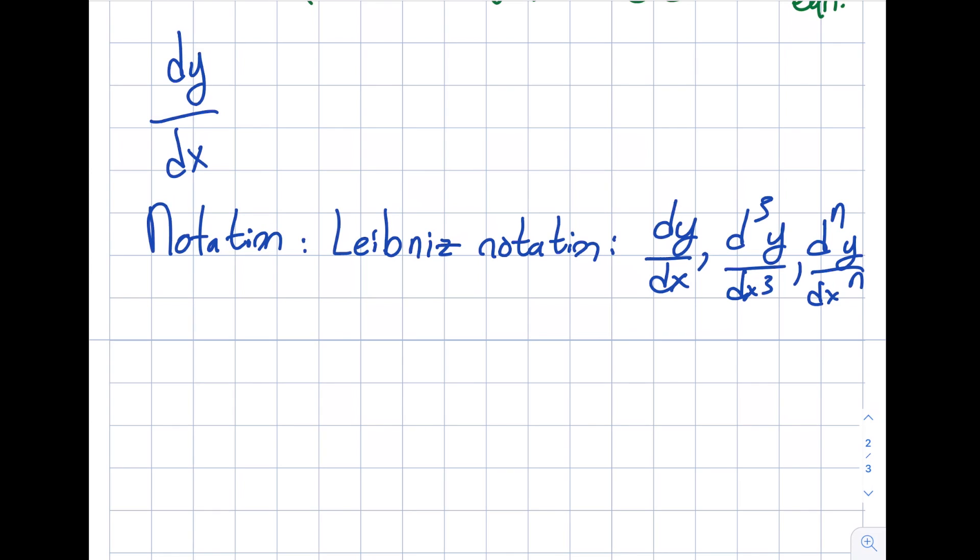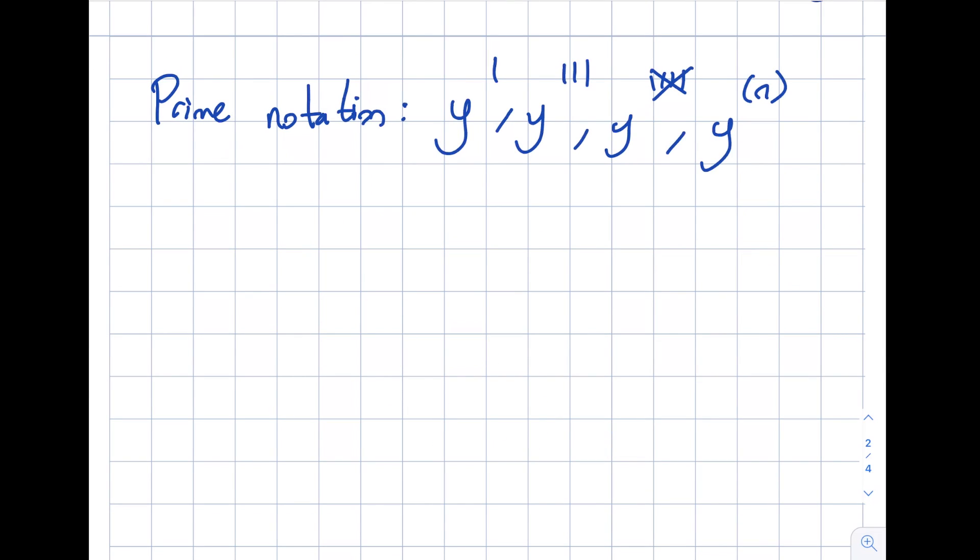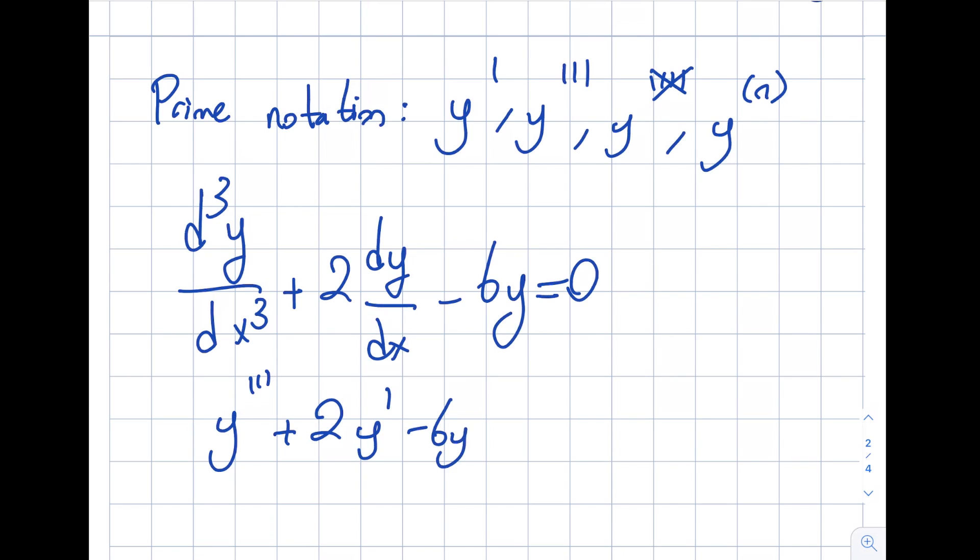If you are wanting to write this a bit shorter, you can write prime notation. I'm almost certain you've seen this in your undergraduate classes. It's y prime, y triple prime. We're not going to write excessive primes - instead we start writing y to the n after the fourth and above. Let's rewrite an equation with Leibniz notation: d³y/dx³ + 2dy/dx - 6y = 0. In prime notation this is y''' + 2y' - 6y = 0. Much nicer, right?